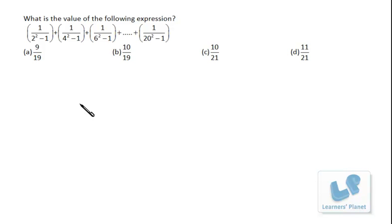Now let's try this problem. It seems to be a difficult one and maybe a lengthy one also, but let's start. What is the value of the following expression: 1 upon 2 square minus 1, 1 upon 4 square minus 1, and the calculation is going till 20.